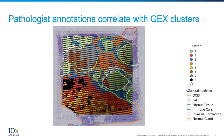Crucially, even though the pathologist annotated a large section of the tissue as invasive carcinoma, Visium data showed that this could be separated into at least four distinct cell clusters — red, yellow, black, and orange spots — based on the gene expression profile within the individual spots.